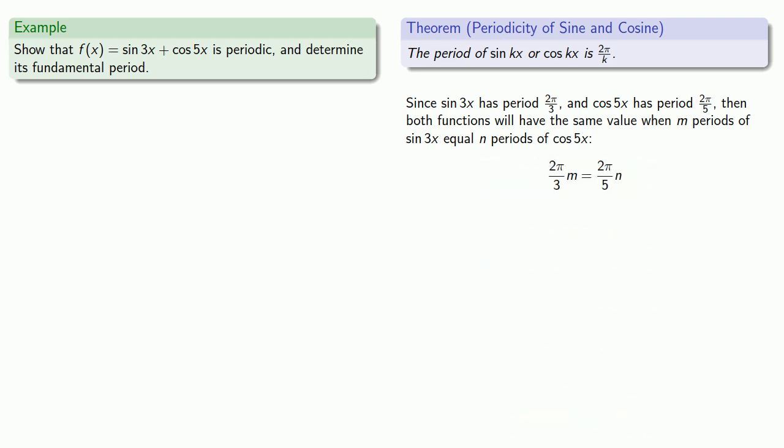We want (2π/3)m = (2π/5)n. We'll do a little algebra. The least value for which this will occur is m = 3, n = 5. In other words, three periods of sin 3x will have the same duration as five periods of cos 5x. And three periods of sin 3x will be an interval of length 2π.